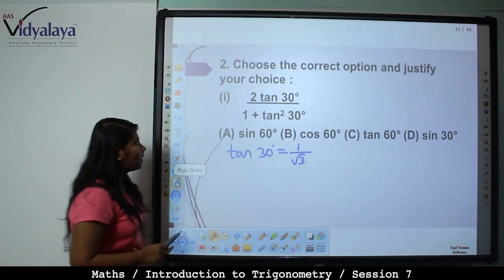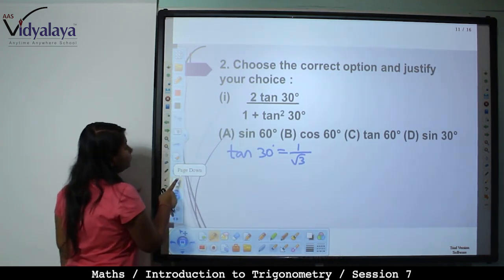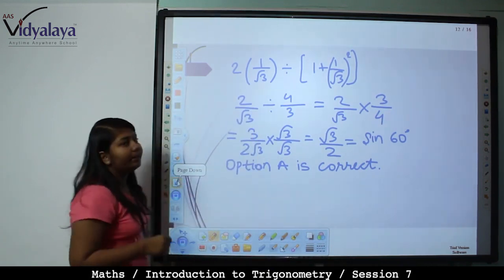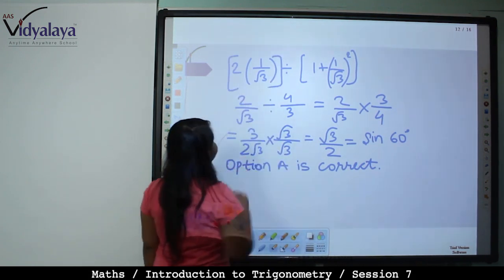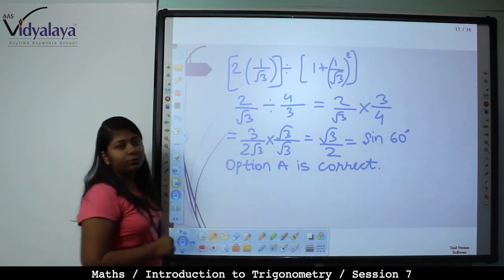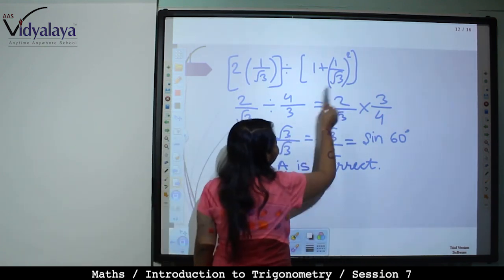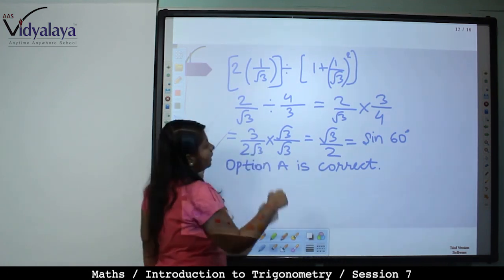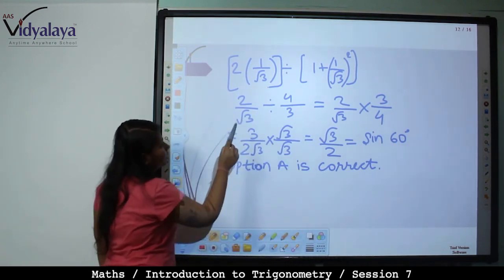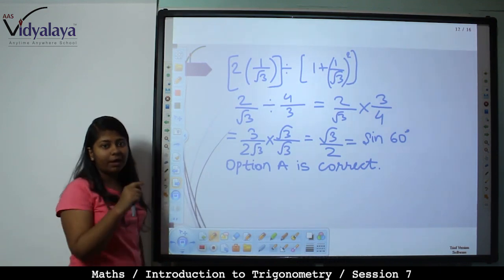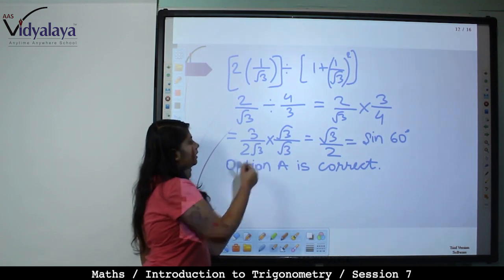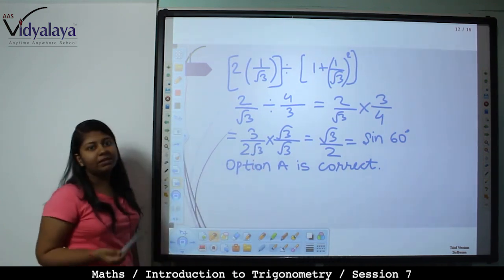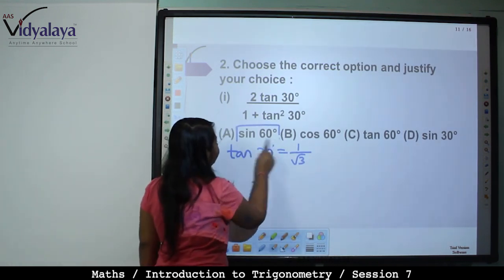Tan 30 value is 1 by root 3. So: 2 into 1 by root 3, divided by 1 plus (1 by root 3) whole square. This gives 2 by root 3 divided by 4 by 3 — because root 3 into root 3 is 3, so 3 plus 1 is 4 by 3. This becomes 2 by root 3 multiplied by 3 by 4, giving 3 by 2 root 3. Rationalize by multiplying by root 3 by root 3: 3 root 3 by 2, which equals sin 60. Hence option A is correct.